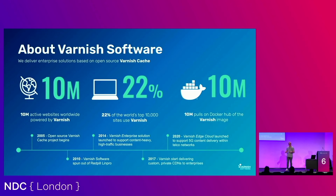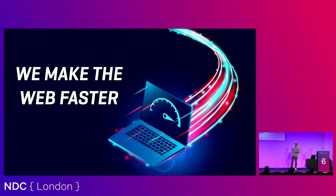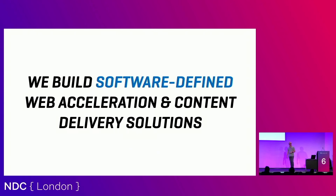Before I can actually talk about the topic at hand, I need to lay the foundations and introduce what we do — that will help contextualize where we're heading. We're a company that cares about caching, web acceleration, and content delivery. Our open source product is used by about 10 million active websites, representing 22 percent of the top 10,000 websites. It all started from an open source project and led to creating a commercial entity that spun out of an open source consultancy in Norway. We make the web faster — that's our bread and butter.